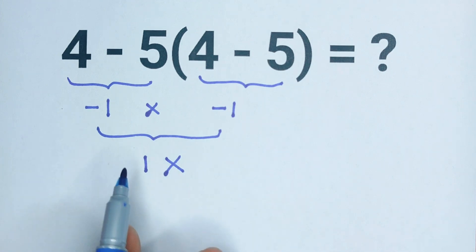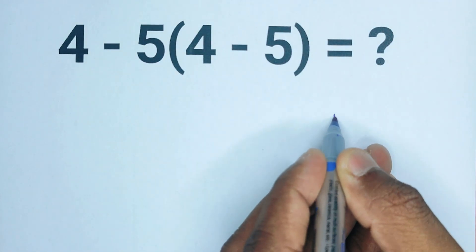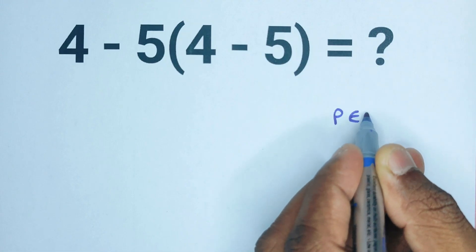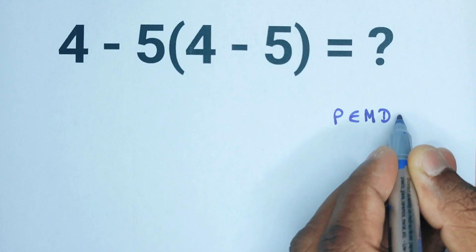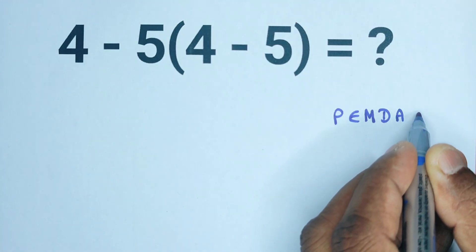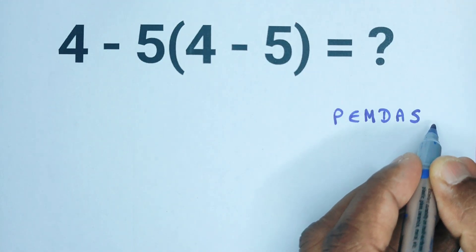You might know it as PEMDAS or BODMAS. In PEMDAS, P stands for parenthesis, E stands for exponents, M stands for multiplication, D stands for division, A stands for addition, and S stands for subtraction.